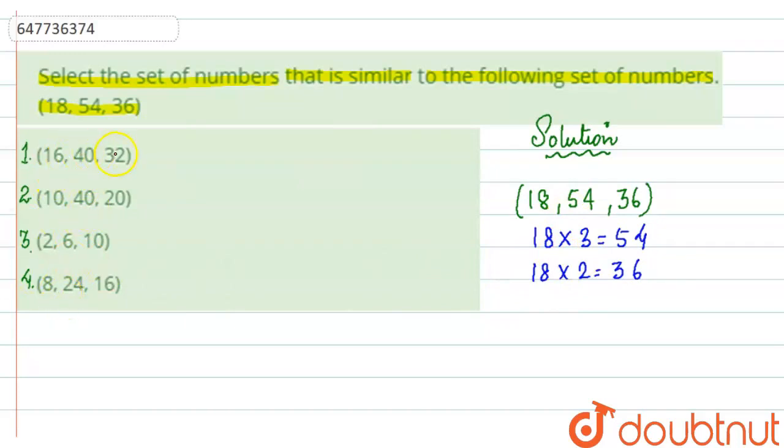16 into 2 is 32, but 16 into 3 is 40. 10 into 2 is 20, but 10 into 4 is 40. Similarly, the third option is not true. 2 into 5 is 10, so it is also incorrect. But last option is 8 into 3 is 24 and 8 into 2 is 16. So that is the correct option that we have.